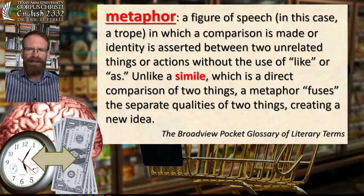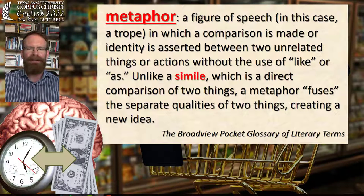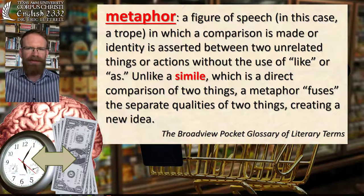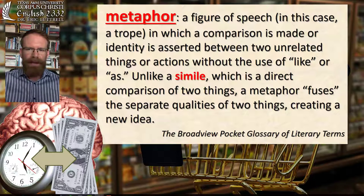So the sentence 'time is money' would be a metaphor — it doesn't use 'like' or 'as.' And the sentence 'time is like money' would be a simile. Distinguishing a simile from a metaphor based on whether it uses 'like' or 'as' is easy, but it's a little misleading. What's important is whether the comparison between two things is an explicit or an implicit comparison — implicit meaning it may not be noticeable. It might be a comparison we forgot was just a comparison.